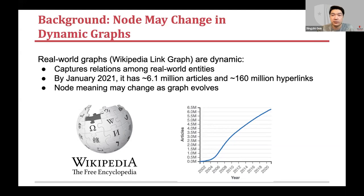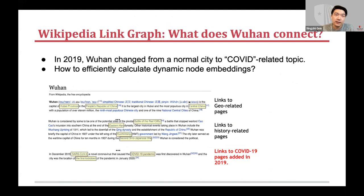I want to show one specific example: the city of Wuhan. Before COVID, Wuhan was probably less famous to people around the world. But at the end of 2019 and early 2020, most people knew it as the first place of the COVID outbreak. The figure shows the Wikipedia article of Wuhan with highlighted hyperlinks. The first two paragraphs relate to geography and historical events, but in 2019 suddenly many COVID-related new links were created. From the graph embedding perspective, the question is how to efficiently track node embeddings in this dynamic massive graph to detect embedding movement of a node and compare it across time.